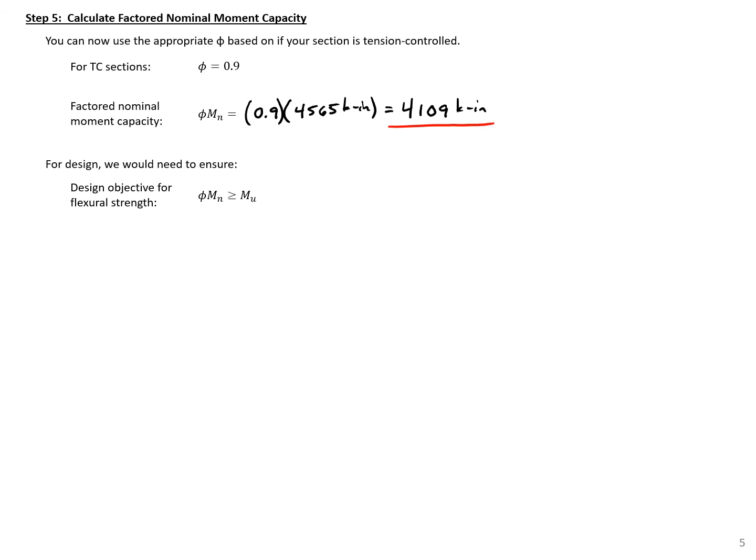Our design objective for flexural strength is to ensure that phi M sub n is greater than or equal to M sub u along the entire member length. That concludes this design example.